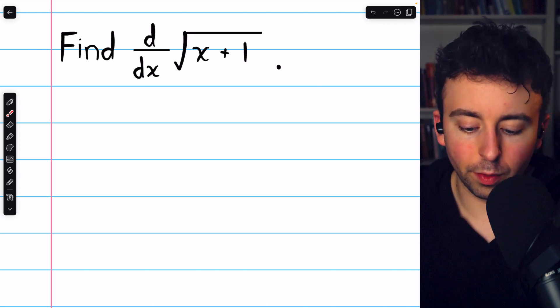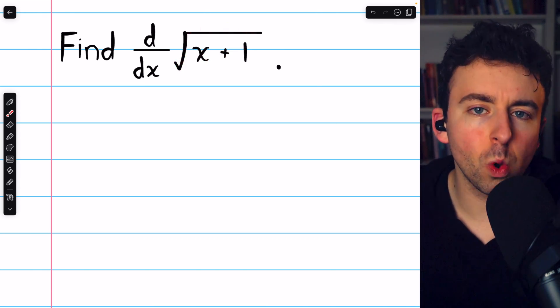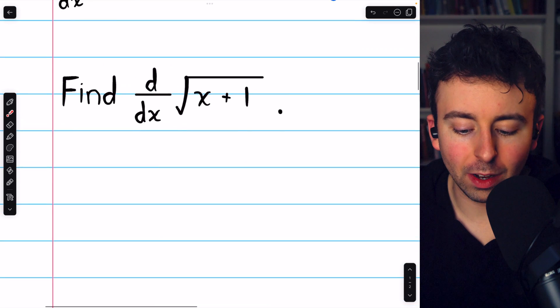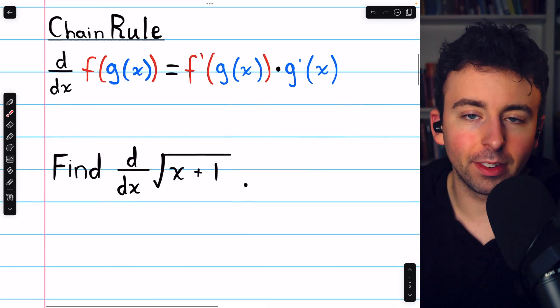To make sense of the derivative of the square root of x plus 1, we've got to think about the chain rule, because this is a composite function.